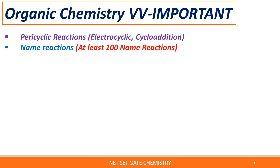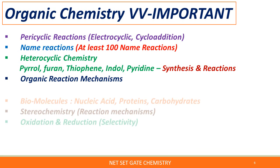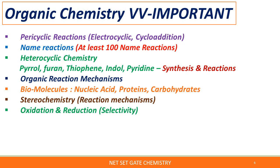You have to remember at least 100 name reactions, excluding the rearrangement reactions already covered. You can follow the Ahluwalia book for these 100 name reactions or cover them online. In heterocyclic chemistry, you have to cover pyrone, furan, thiophene, indole, and pyridine synthesis and their reactions.